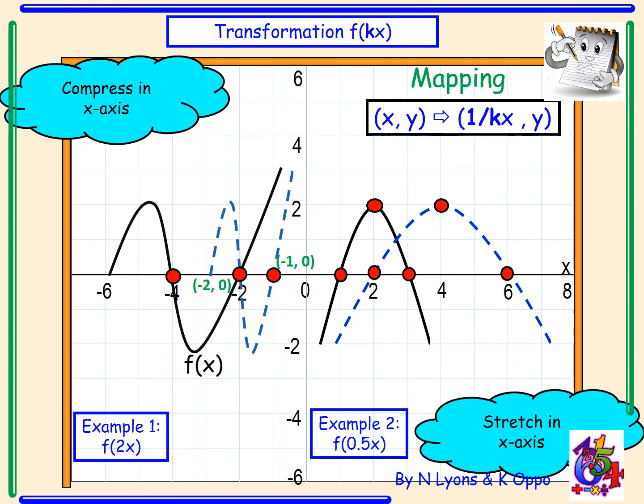So the point (1, 0) becomes the point (2, 0). The point (2, 2) becomes (4, 2), and the point (3, 0) becomes (6, 0). So we have multiplied all our x-coordinates by 2.